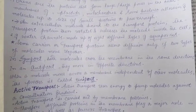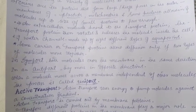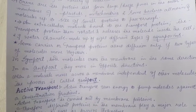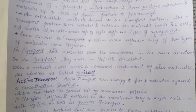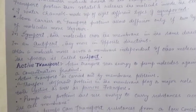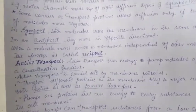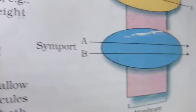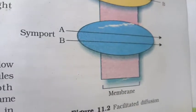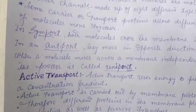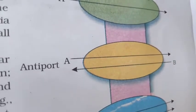Some carrier or transport proteins allow diffusion only if two types of molecules move together. In symport, both molecules cross the membrane in the same direction — molecules A and B crossing together. In antiport, the molecules move in opposite directions.